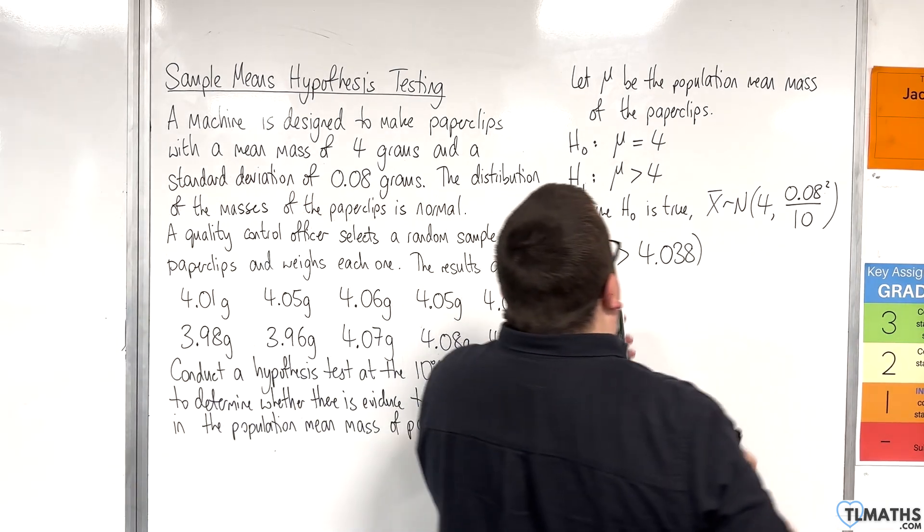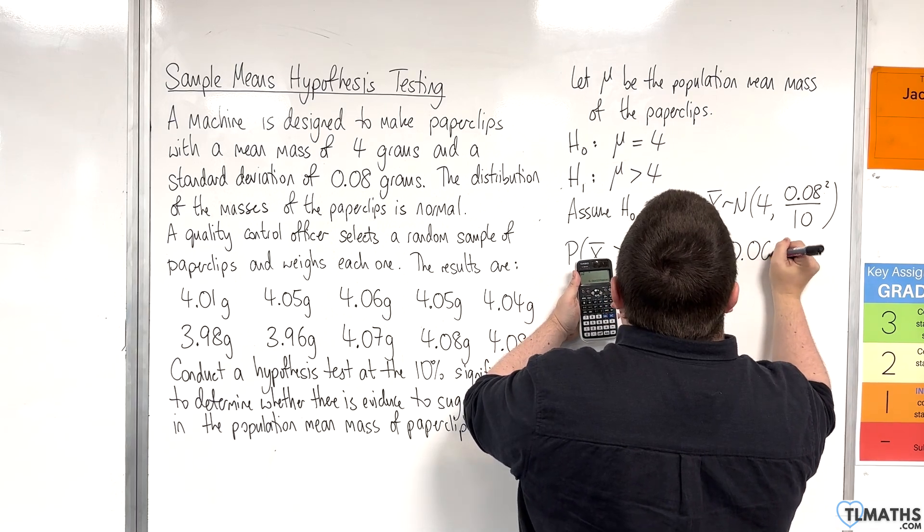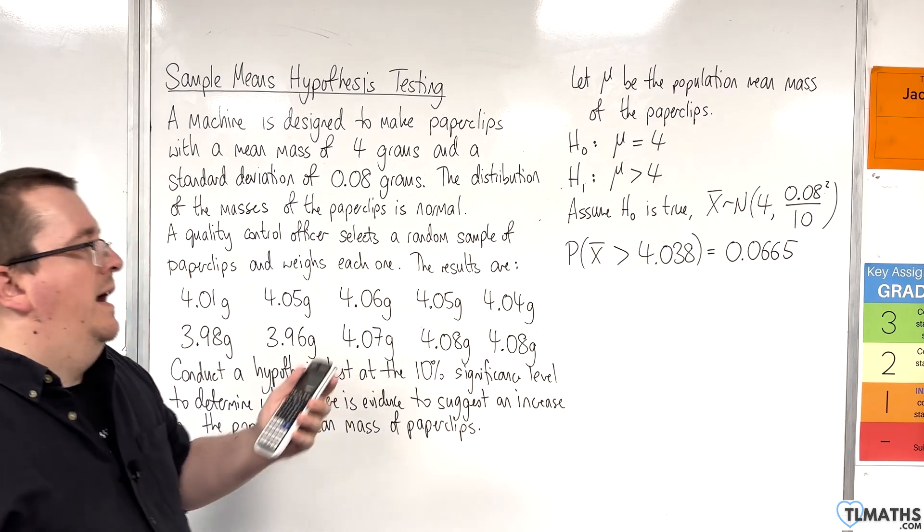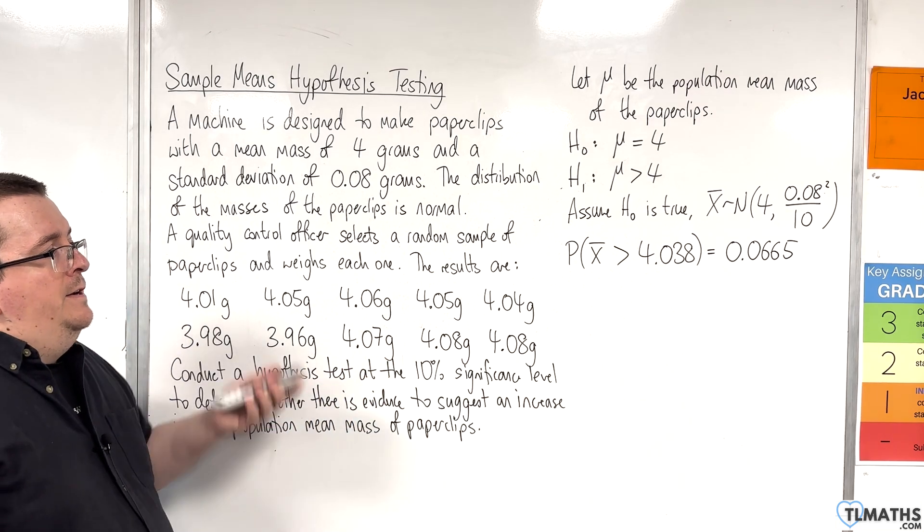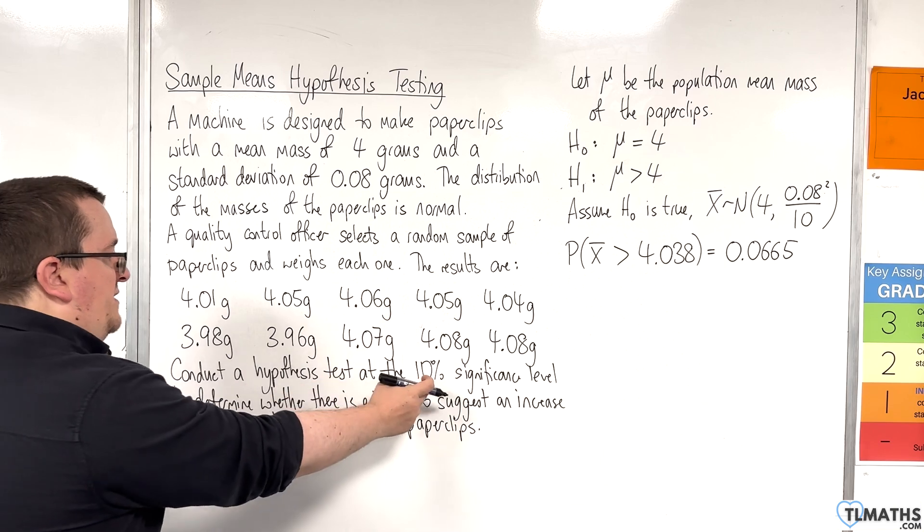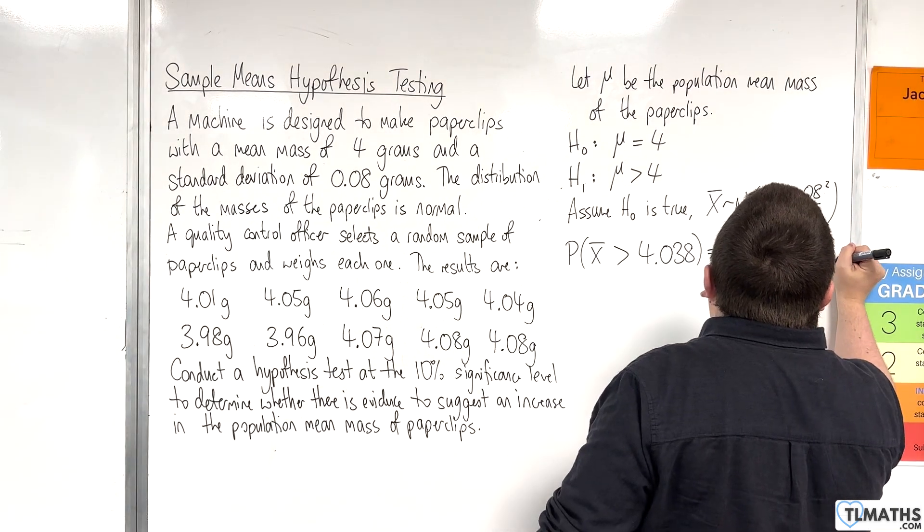We're getting 0.06653798. That needs to be compared to the significance level, which is 10%. That's clearly less than the significance level.